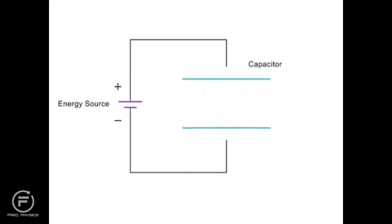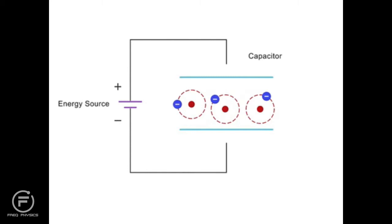Capacitors work to store energy by stretching the orbits of electrons in a dielectric compound between a positively charged plate and a negatively charged plate.